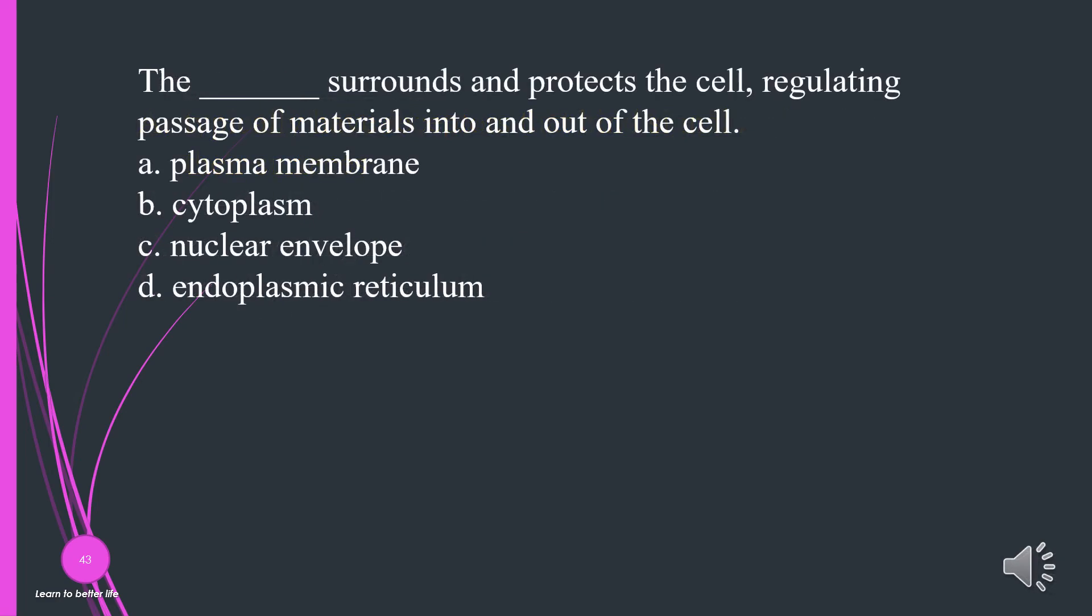The what surrounds and protects the cell, regulating passage of materials into and out of the cell? A. Plasma membrane. B. Cytoplasm. C. Nuclear envelope. D. Endoplasmic reticulum. The answer is A, plasma membrane.